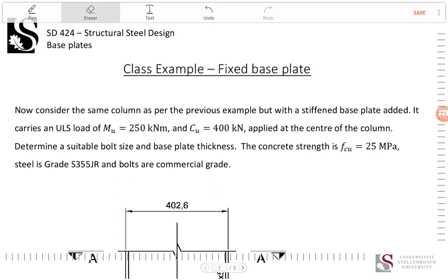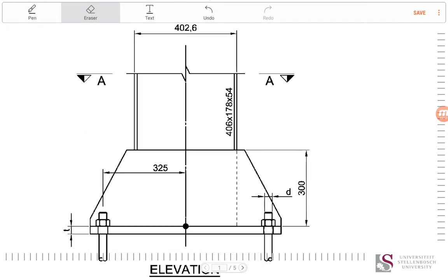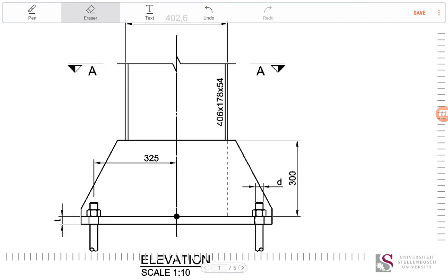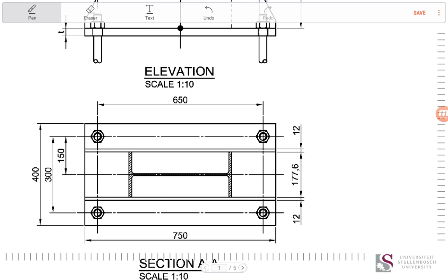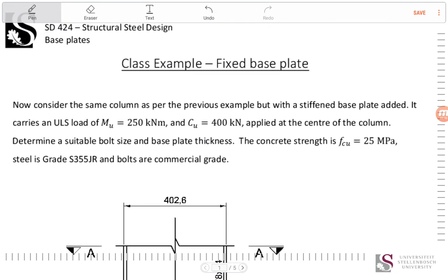Good day ladies and gentlemen, welcome to our next worked class example. Today we're going to be looking at a fixed base plate — this is part of Stellenbosch University Structural Design 424, Structural Steel Design course. We are in the middle of the base plate section. Looking at a cross section through our column, we've got a steel column — a 406×178×54 UB column — fixed onto a base plate, with a stiffener on each side, and a plan view showing the column in the middle with four holding down bolts at the corners.